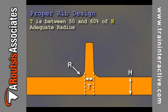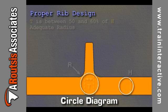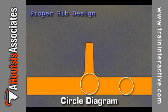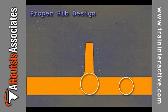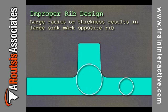One way to evaluate rib design for sink marks is to use the circle diagram. This method uses a circle drawn in the center of the part wall to evaluate the rib design. The circle represents the relative amount of material which must be cooled. Since the shrinkage rate increases as the part thickness increases, a larger circle would indicate more shrinkage and a larger sink mark.